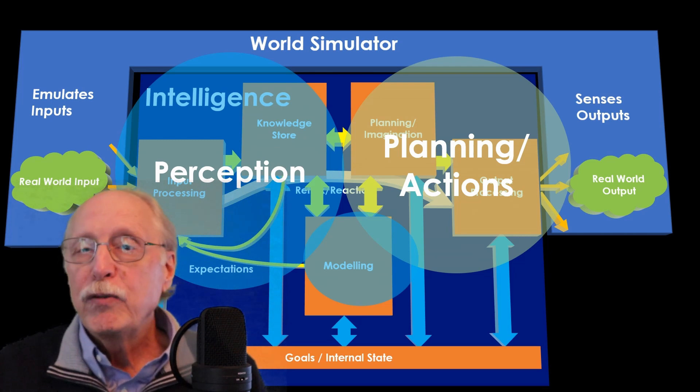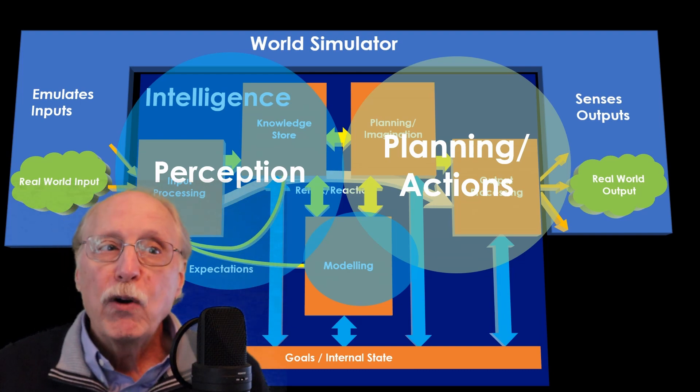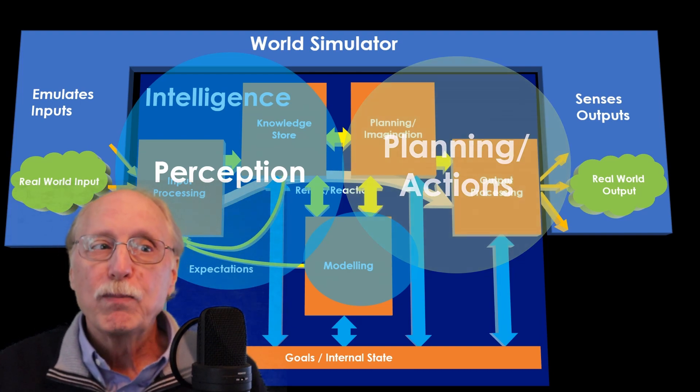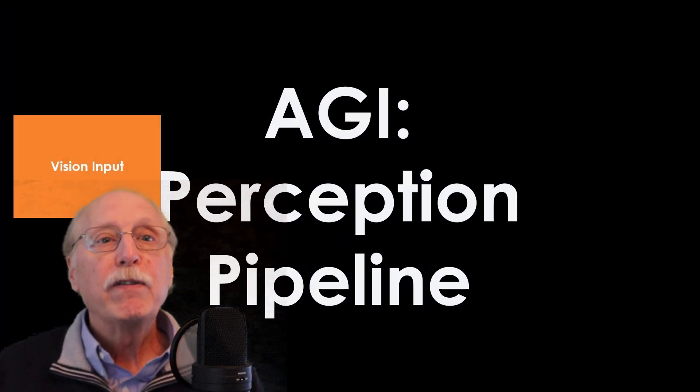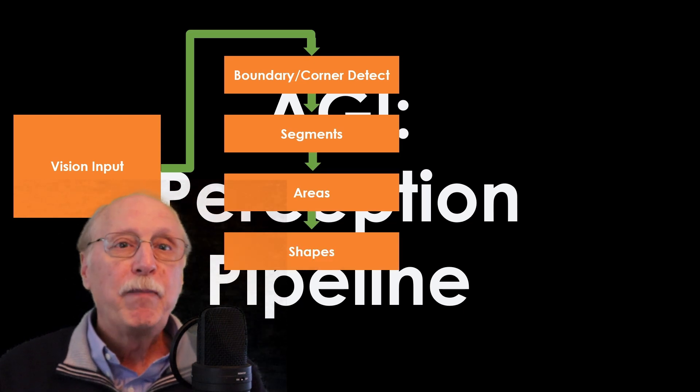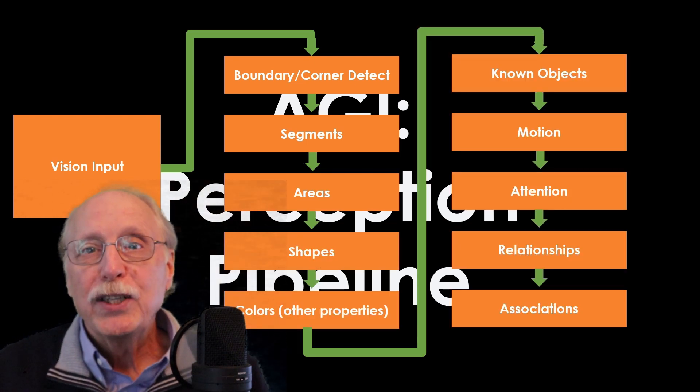In the last video, I introduced a system for perception in the brain simulator, and in this video I'll explain how the system works in broad terms to form a perception pipeline. In future videos, I'll describe individual steps in greater detail. Leave a comment below to let me know which ones you'd like to see first.